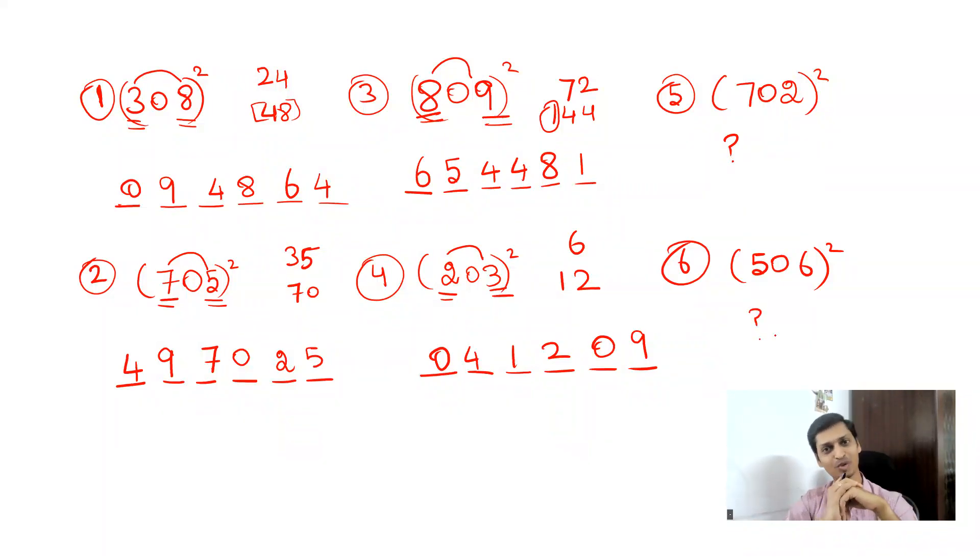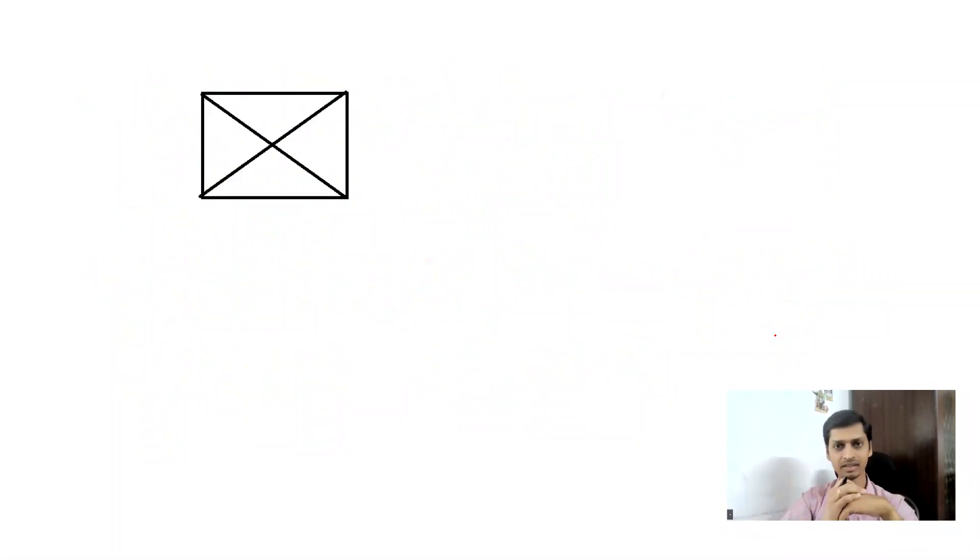Now you have two questions and the answers for these two questions need to be put in the comment section. These questions are a workout for you. Now moving to the second shortcut, which is based on visual reasoning. We can call this topic figure counting or embedded figure counting.